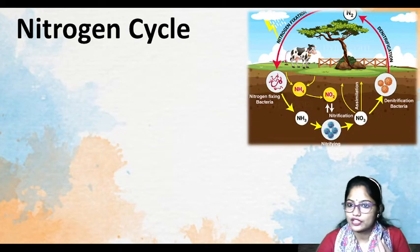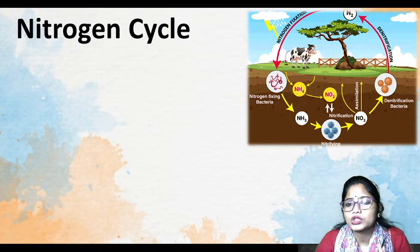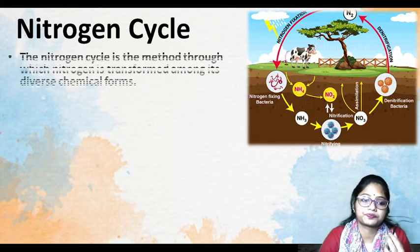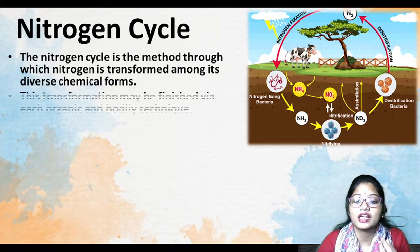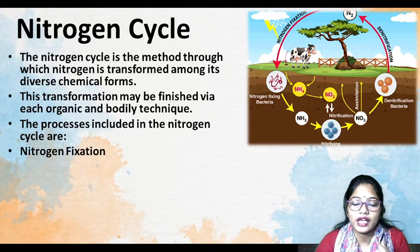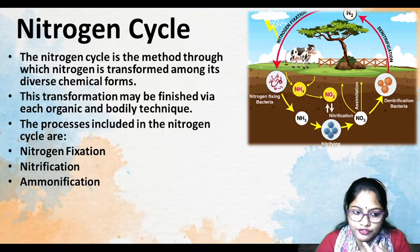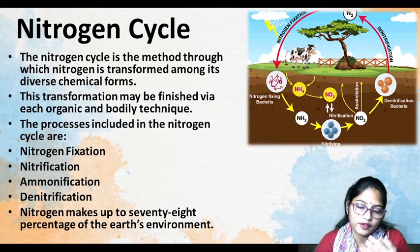Now, what is the Nitrogen Cycle? We know that nitrogen in our environment is present in a very large amount — 78% of our atmosphere is covered by nitrogen. But can plants take that nitrogen directly? No, they cannot take atmospheric nitrogen directly. So with the help of some nitrogen-fixing bacteria, nitrogen is converted into different derivatives that plants can absorb. The Nitrogen Cycle is the method through which nitrogen is transferred among its diverse chemical forms, keeping it stable in our environment — transferring from organisms, to plants, to soil.